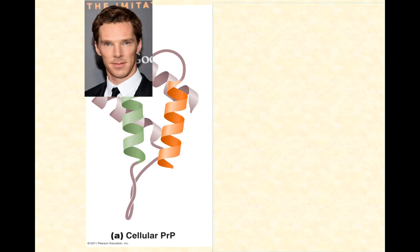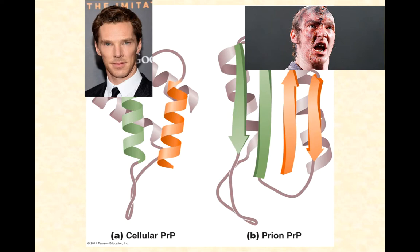Imagine the healthy version of cellular PRP is like Benedict Cumberbatch all cleaned up at the Oscars. There's another version of the exact same protein called prion PRP — the zombie version. The same amino acid primary sequence can fold into a different three-dimensional shape, with different secondary and tertiary structure, and be stable in that other conformation. When it folds into that other shape, we call it a prion — the unhealthy, zombie form.